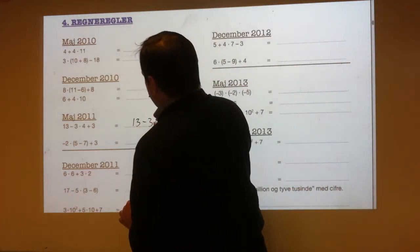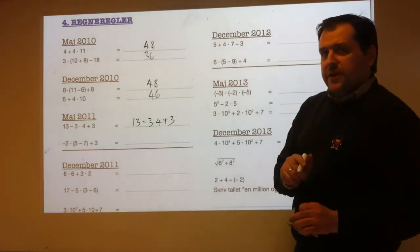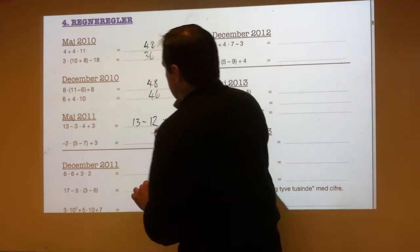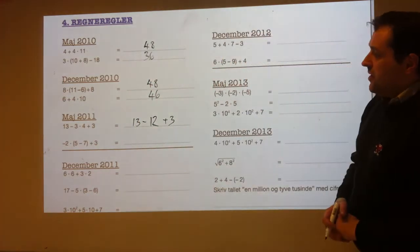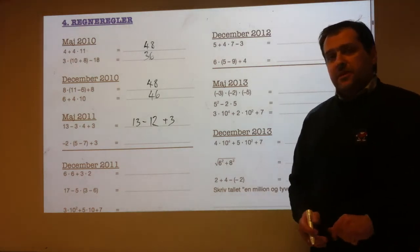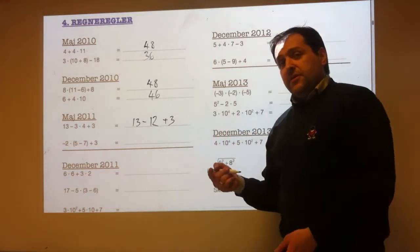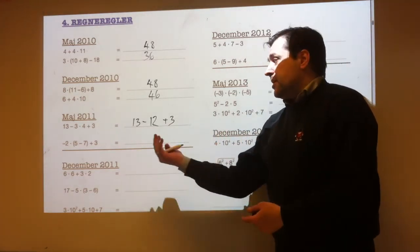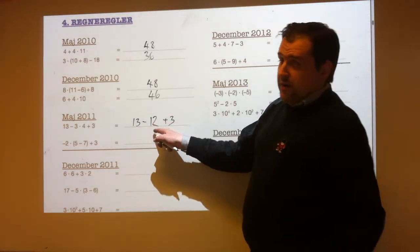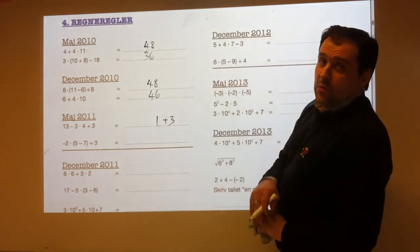13 minus 3 times 4 plus 3. Do the 3 times 4 first: 3 times 4 is 12. So it's 13 minus 12 plus 3. There's no rule about doing plus before minus or minus before plus, so you just do them in order from left to right. So 13 minus 12 first.